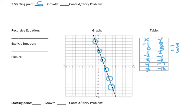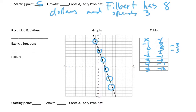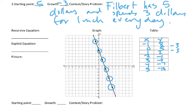So, we could say something like, Philbert has $5. And spends $3 for lunch every day. So, eventually, he's going to go in the hole, and he's going to have to pay off his debts eventually.